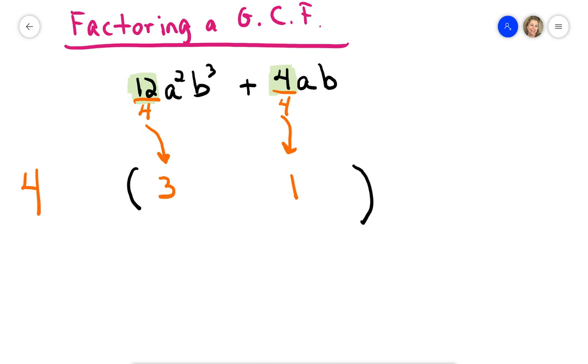Now, I move on to the variables, and in this example, I have two different letters, A's and B's. The first term has an A squared, and the second term has an A. Remember, A squared is A times A, and the second term is just an A. They both have an A in common, so I'm going to factor out an A.